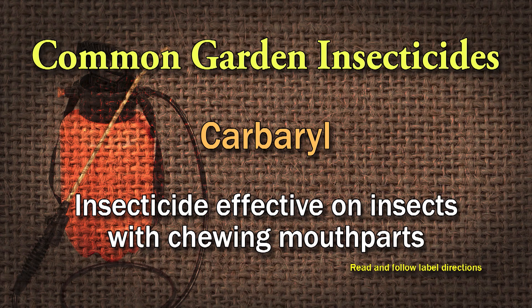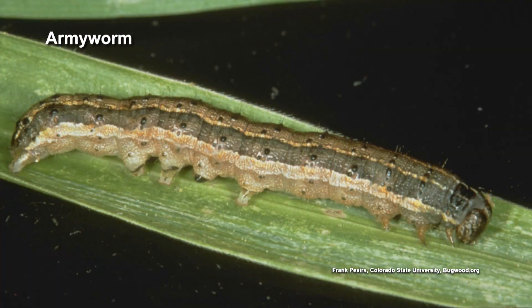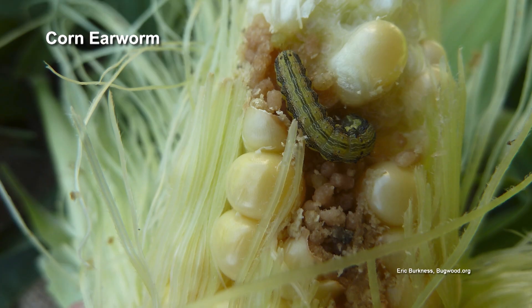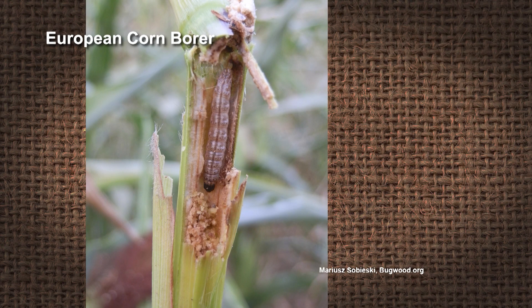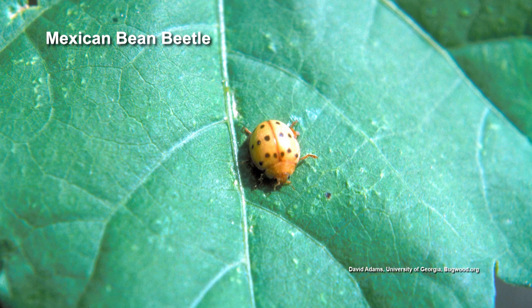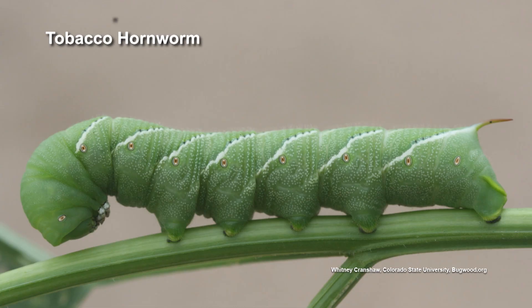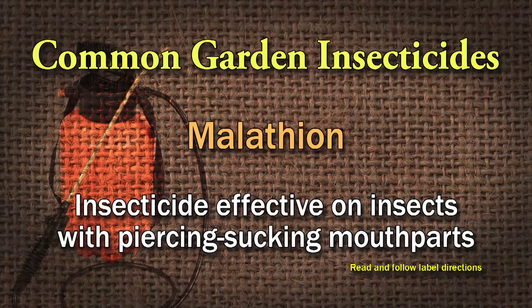Carbaryl is known for working on insects with chewing mouthparts, and it does a pretty good job on worms and caterpillars — armyworms, bean leaf beetles, corn earworms, European corn borer, Japanese beetles, cabbage worms, Mexican bean beetles, and hornworms. Malathion is known for working on insects with piercing-sucking mouthparts, doing a better job on aphids, immature scale insects, leaf bugs, plant bugs, stink bugs, squash bugs, thrips, and whiteflies. Those are your old standbys.